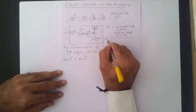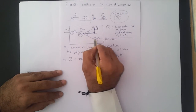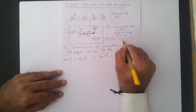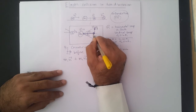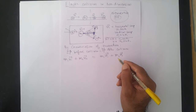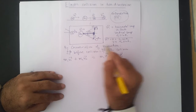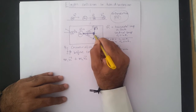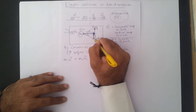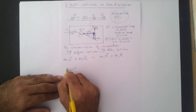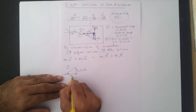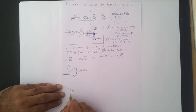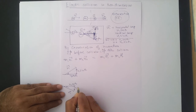Similarly for V2, the horizontal component is V2·cos(theta2) and the vertical component is V2·sin(theta2). Let me show this diagram again to be clear: for V1 at angle theta1, the vertical component is V1·sin(theta1) and the horizontal component is V1·cos(theta1). For V2 at angle theta2, the horizontal component is V2·cos(theta2) and the vertical component is V2·sin(theta2).